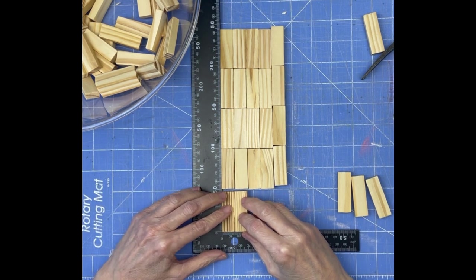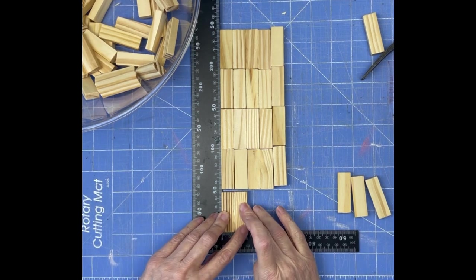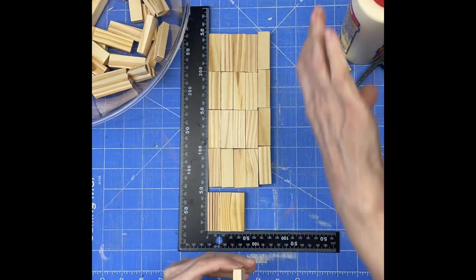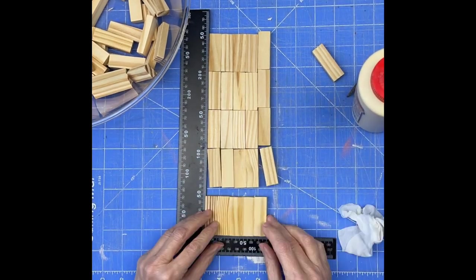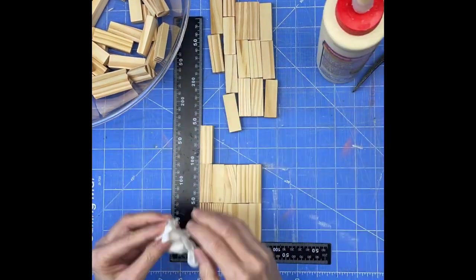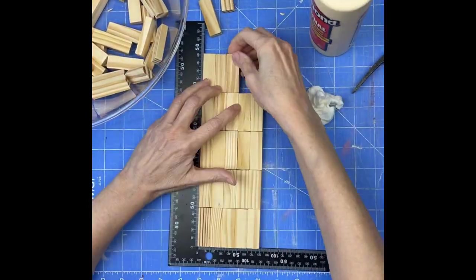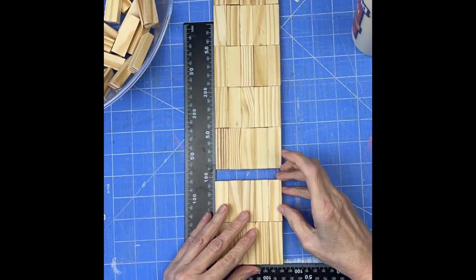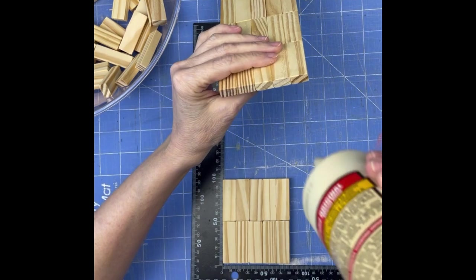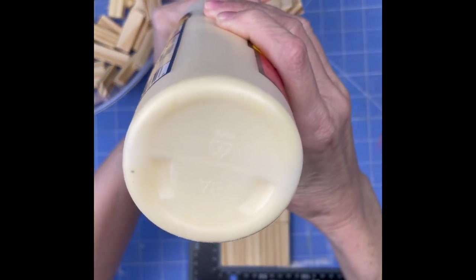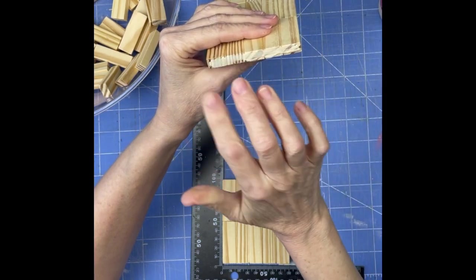This glue, however, does not dry clear, so be careful to clean up any glue that seeps out between the blocks with either a wet paper towel, I like to use wipes. The most difficult part of this project is definitely just waiting for the glue to dry, but be patient. You'll get much better results if you just leave it alone and let it set up.